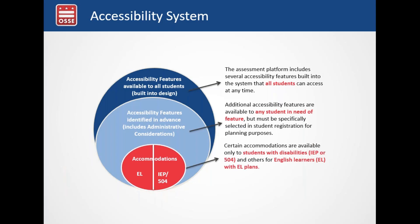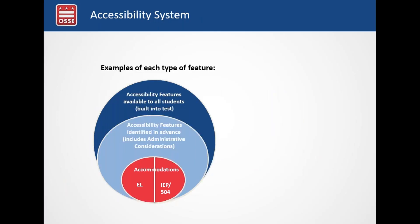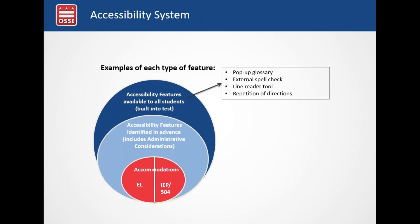Accommodations are available only to students with disabilities or for English learners with EL plans. Examples of accessibility features available to all students include a pop-up glossary, external spell check, a line reader tool, and repetition of directions. It is best practice to introduce these features to students in advance of the assessment.